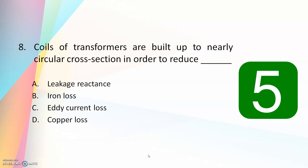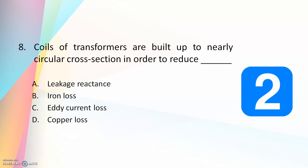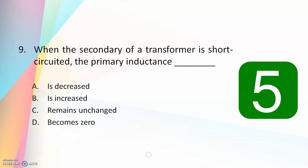Eighth question: coils of transformers are built up to nearly circular cross section in order to reduce — leakage reactance, iron loss, eddy current loss, or copper loss. The answer is it is done to reduce the copper loss. The cross section is made circular to reduce the copper loss.